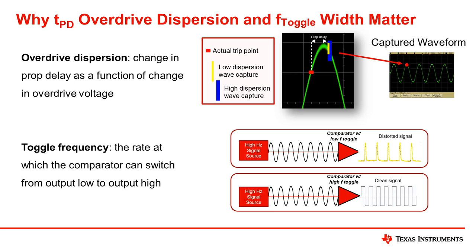Toggle frequency is the rate at which the comparator can switch from output low to output high. A high toggle rate ensures that a signal with a very high frequency can maintain each rise and fall without any information loss at the output of the comparator.